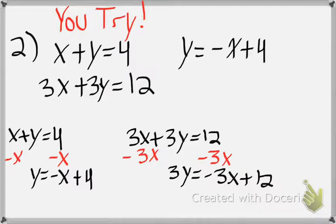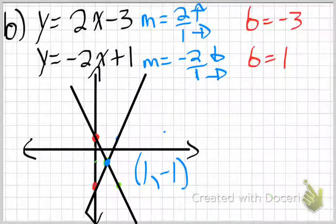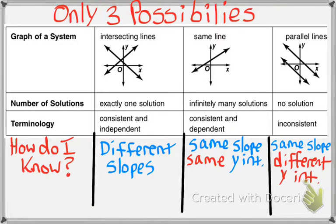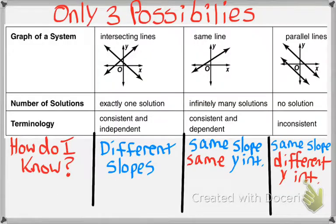When getting y by itself in the second equation, when you move x to the other side, list it first — since it said minus 3x, it becomes negative 3x. Finish by dividing both sides by 3. You end up with y = -x + 4. These two equations look familiar — they're exactly the same. Both have a slope of negative 1 and a y-intercept of 4. Same slope and same y-intercept means it's the same line: infinite solutions, consistent and dependent.